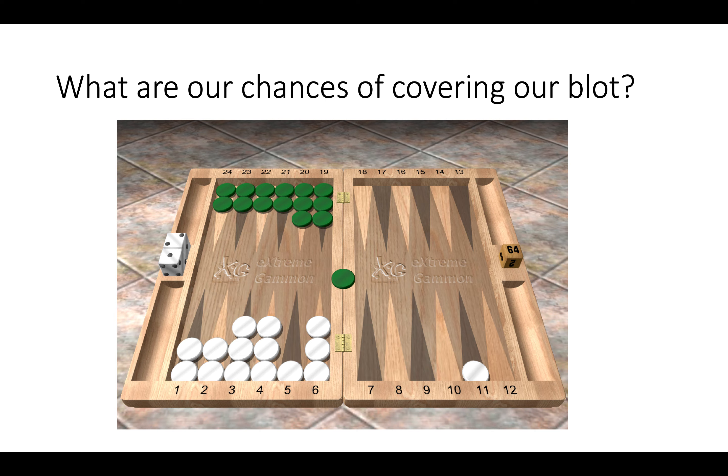Now here green is on the bar and we as white have a blot in our home board. So what is our chances of covering that blot? How many rolls will cover that blot in our home board? So here you might want to pause and make those calculations.